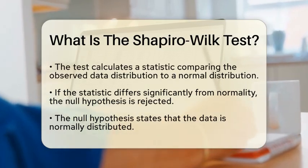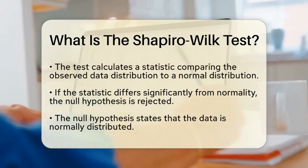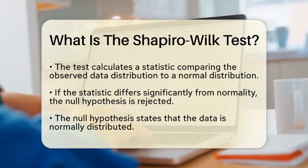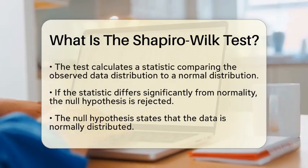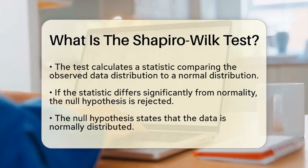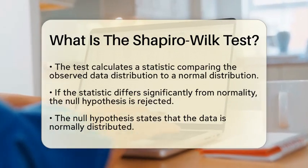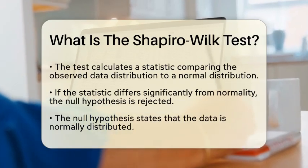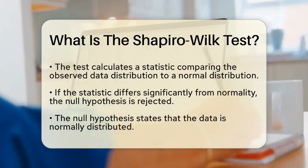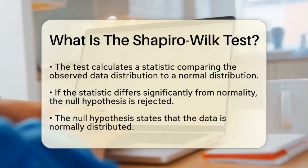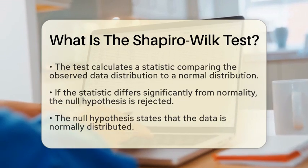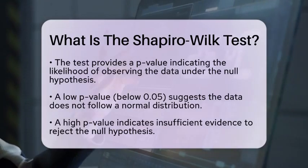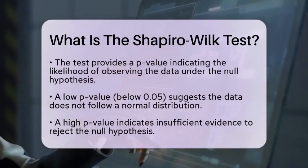The Shapiro-Wilk test works by calculating a test statistic that compares the observed distribution of the data to a normal distribution. If the test statistic is significantly different from what would be expected under normality, the null hypothesis — which states that the data is normally distributed — is rejected.